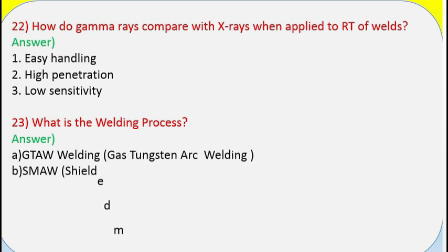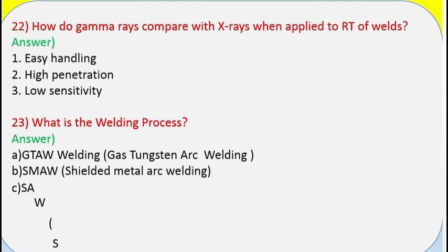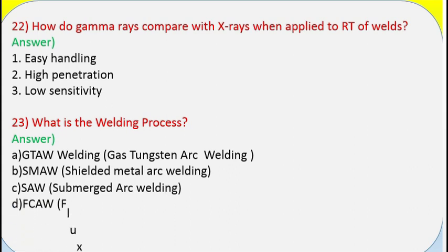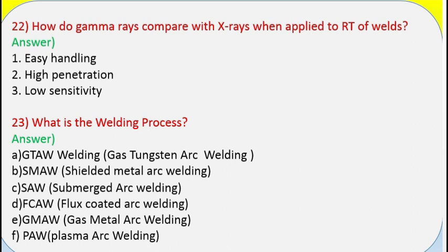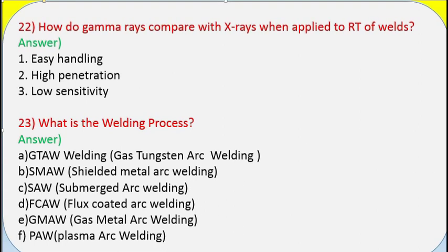Question 23: What are the welding processes? Answer: (a) GTAW — gas tungsten arc welding. (b) SMAW — shielded metal arc welding. (c) SAW — submerged arc welding. (d) FCAW — flux-cored arc welding. (e) GMAW — gas metal arc welding. (f) PAW — plasma arc welding.